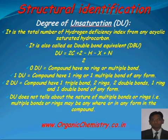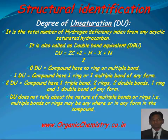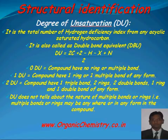If the value of DU is 0, the compound has no ring and no multiple bond. If the value of DU is 1, the compound has one ring or one multiple bond of any form. This multiple bond may be carbon-carbon, carbon-nitrogen, carbon-oxygen, carbon-sulfur, nitrogen-oxygen, or any multiple bond containing one pi bond.